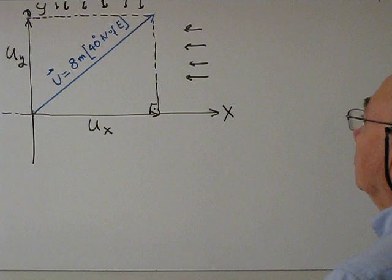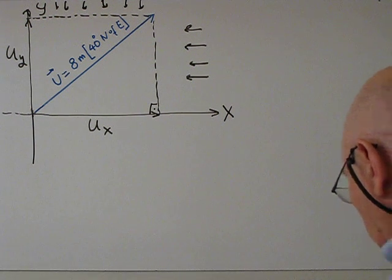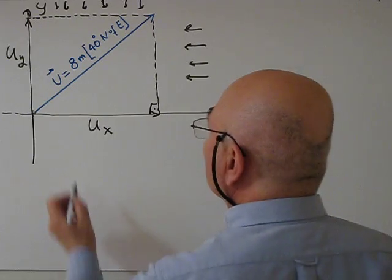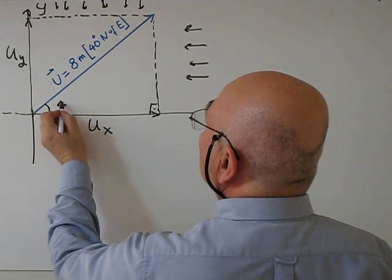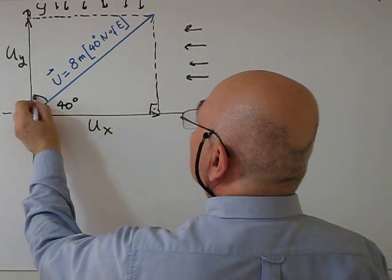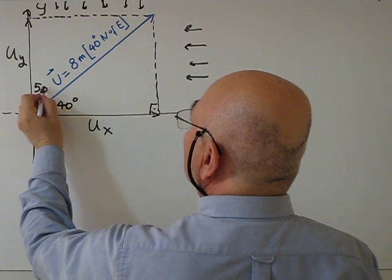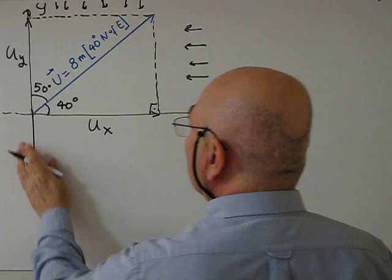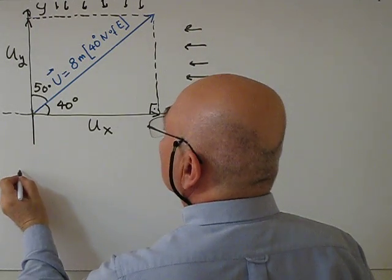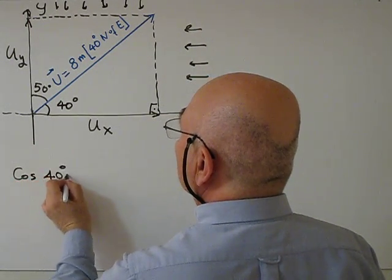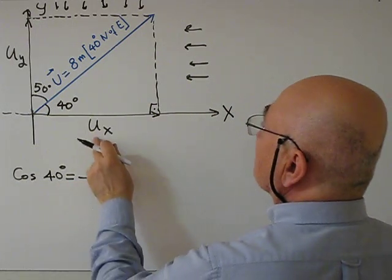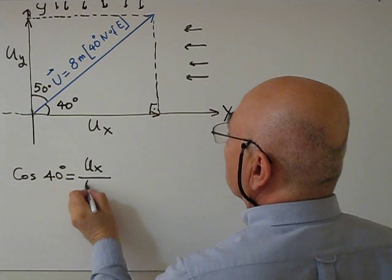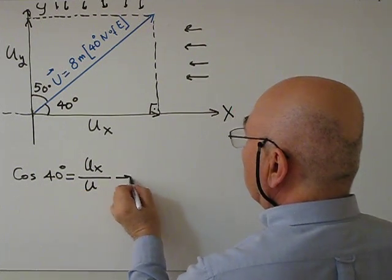For this, this is 40 degrees, this is 50 degrees (90 minus 40). So when we use trigonometry, cosine 40 degrees equals adjacent over hypotenuse, ux over u. From here we get ux equal u times cosine 40.